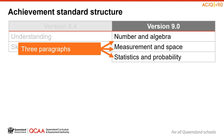In Version 9, the Achievement Standard is structured in a three-paragraph structure, sequenced in the order of how the content strands appear in the curriculum. Noting that in Prep to Year 2, the third paragraph only contains statistics content, as probability is not introduced until Year 3.